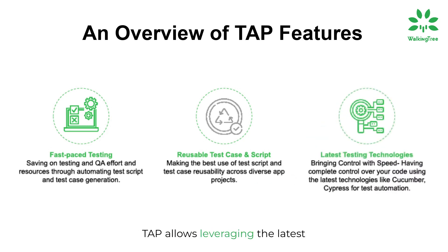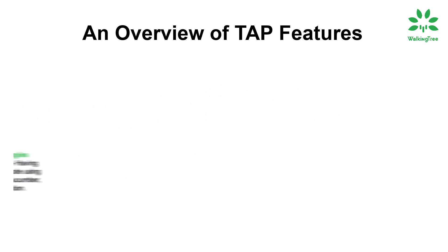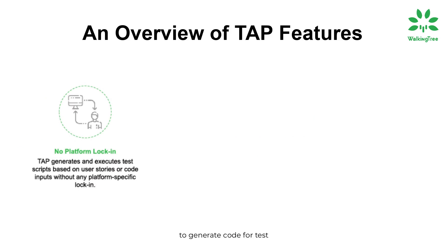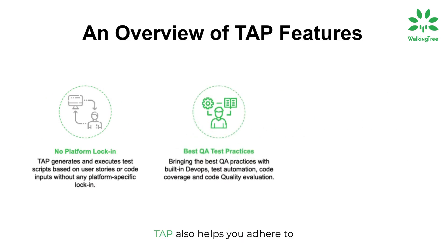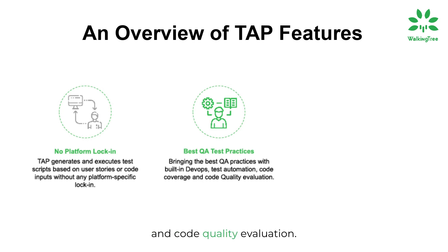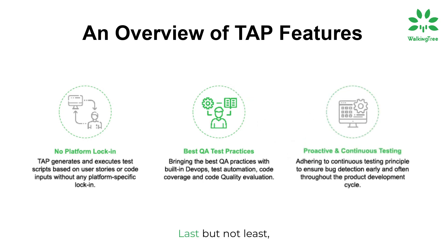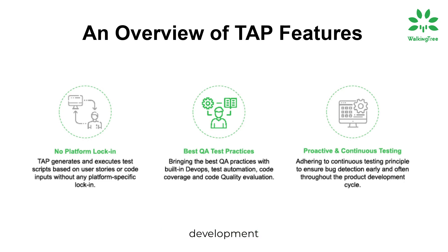Thirdly, TAP allows leveraging the latest test automation technologies like Cucumber, Cypress, etc. TAP functions as a test platform to generate code for test scripts based on user stories or code inputs. TAP also helps you adhere to best QA practices through built-in DevOps, test automation, and code quality evaluation. Last but not least, TAP adheres to continuous testing principles to ensure bug detection early and often throughout the product development cycle.